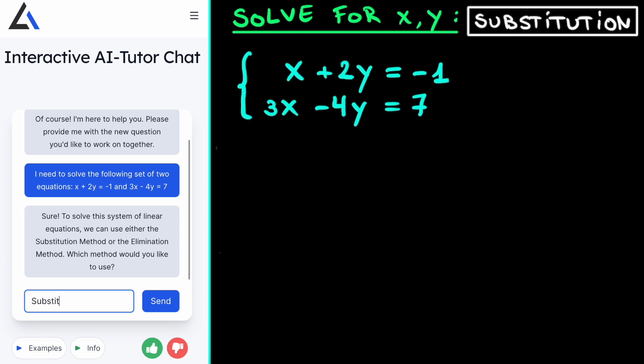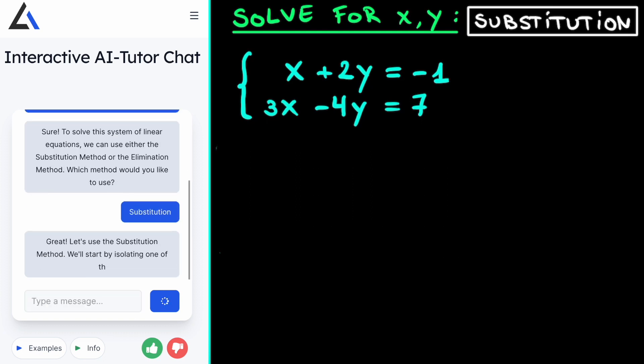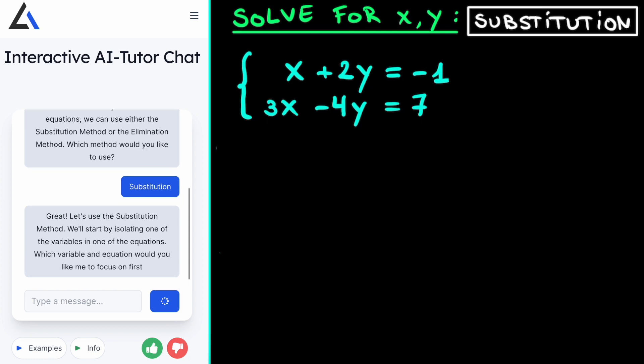In this video, we will use the substitution method and leave the elimination method for a future video. So, we tell the AI Tutor that we want to do substitution. It responds by saying that the substitution method consists of picking one of the two equations, so let's label it 1 and 2, and then for one of these equations, isolate one variable, either x or y. Then it asks us which equation and variable we would like to focus on.